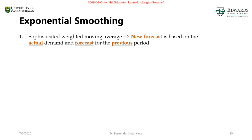The third method under averaging methods for time series analysis is exponential smoothing. We started with the naive forecast, then talked about moving average and weighted moving average. In all those methods, when it comes to predicting for the future, we were only relying on the actual demand from the previous period. However, exponential smoothing is a bit more sophisticated in that sense.